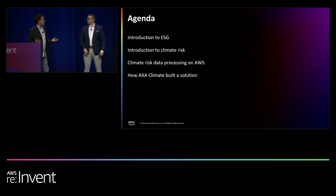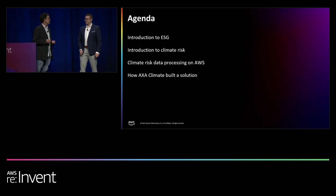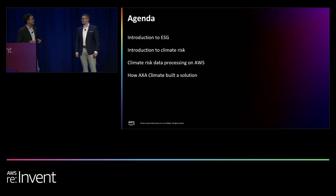My name is Max Richter and together with me is Pierre Suchet. I'm the CTO of AXA Climate. In today's presentation, Max will first dig into what is ESG — Environmental, Social and Governance — an introduction to climate risk and how it is computed. Then we will look at the features that AWS provides to source and process climate risk data. And finally, I'll present how we implemented this at AXA Climate.